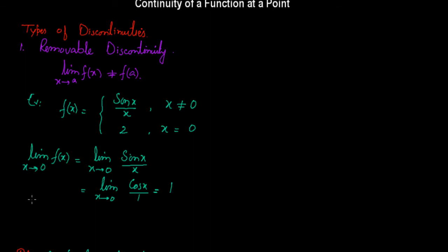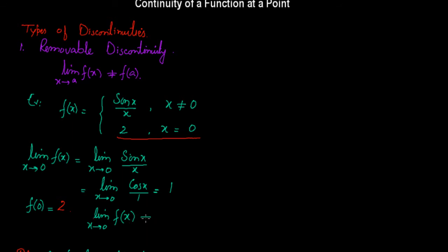But we see that f(0) is defined to be 2. So f(0) equals 2. Therefore the limit as x approaches 0 of f(x) is not equal to f(0), and hence this function has a discontinuity at 0. This discontinuity we call a removable discontinuity.